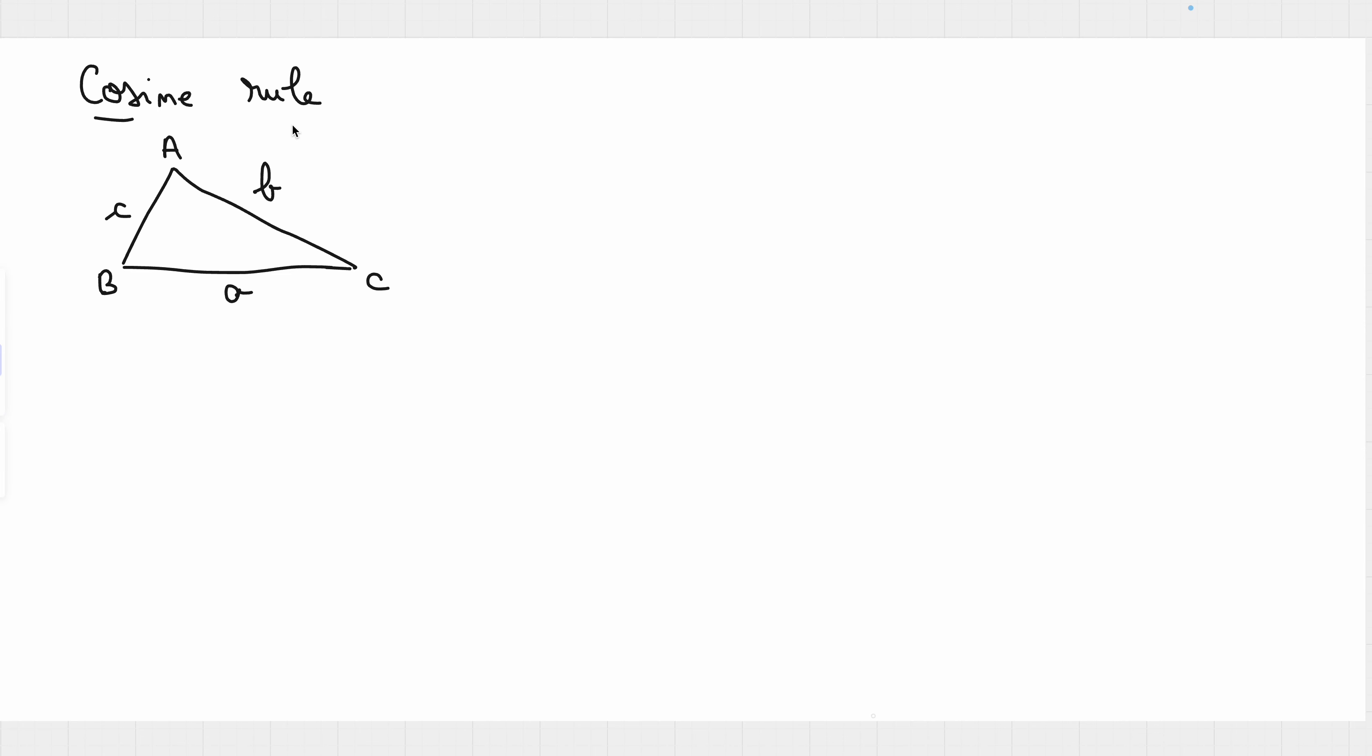Cosine rule says that for example if we have the angle A, and we are going to include this in our equation, we are going to start with the opposing side and write that the opposing side squared equals this side squared plus this side squared, so b squared plus c squared minus 2 times b times c cosine of A.